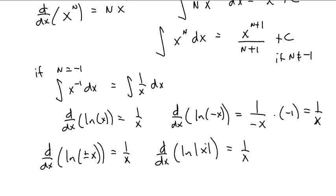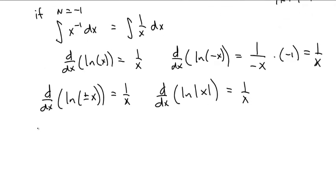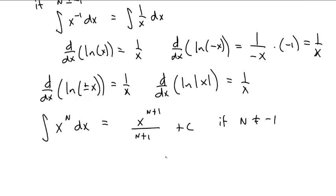So why don't I just sum this up by saying the integral of x to the n dx is x to the n plus 1 over n plus 1 plus c, if n does not equal negative 1, and ln of the absolute value of x plus c if n equals negative 1.